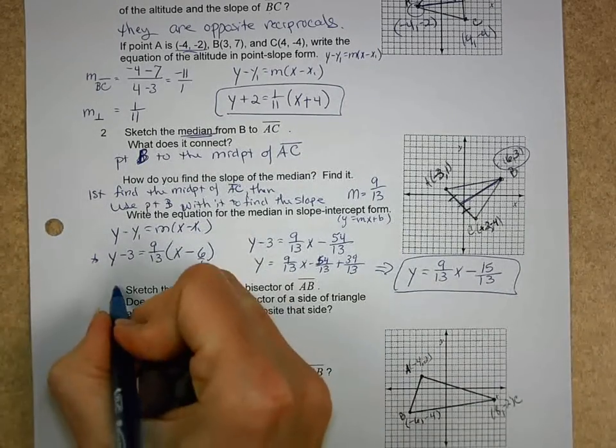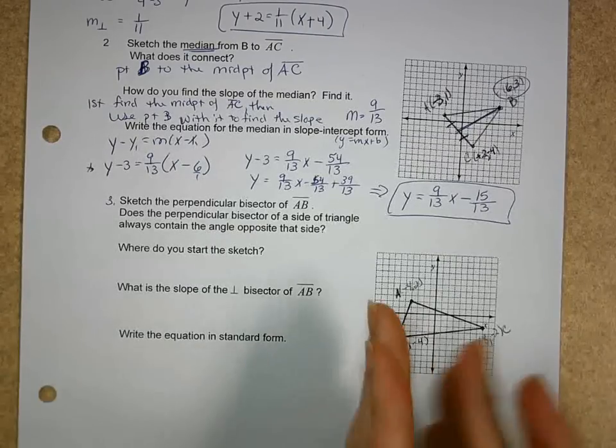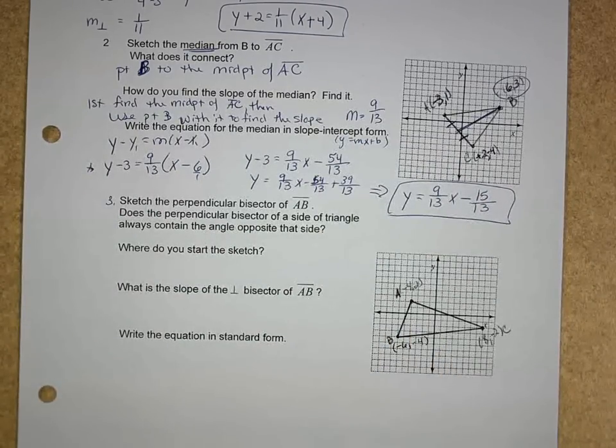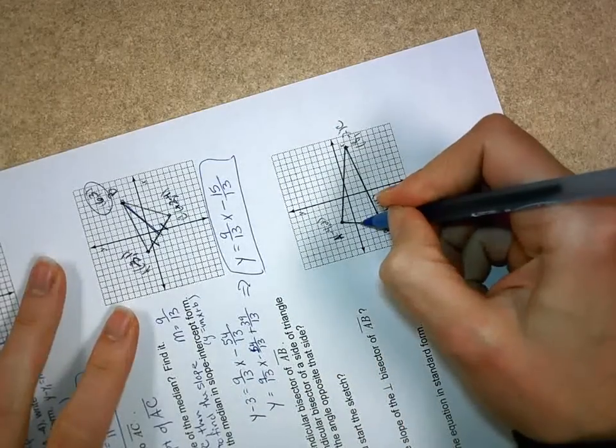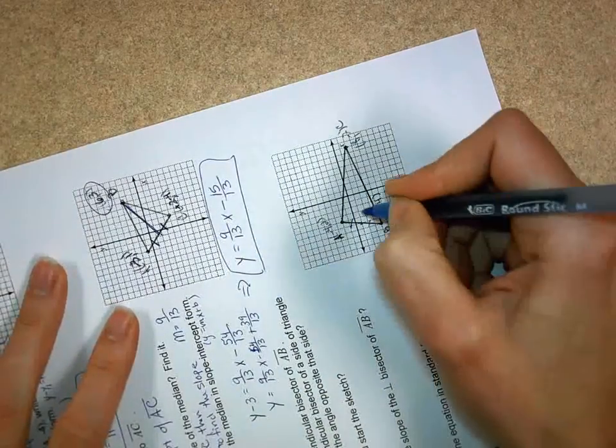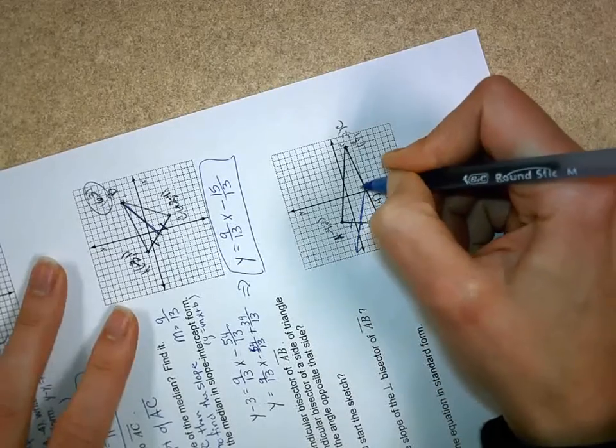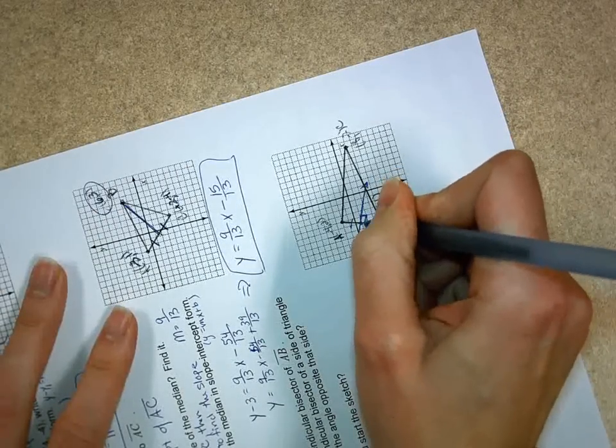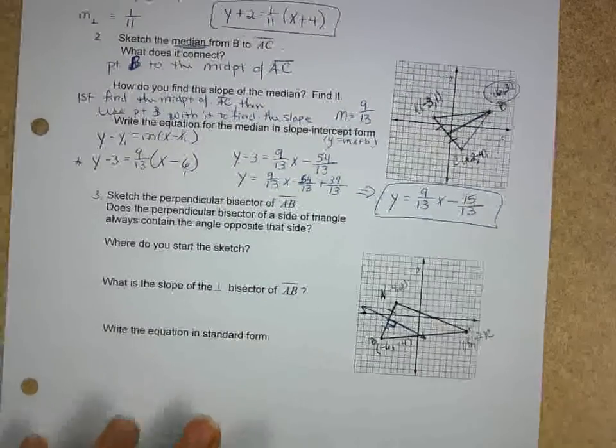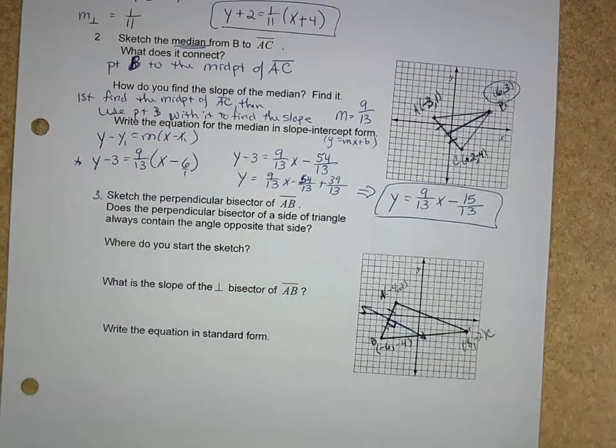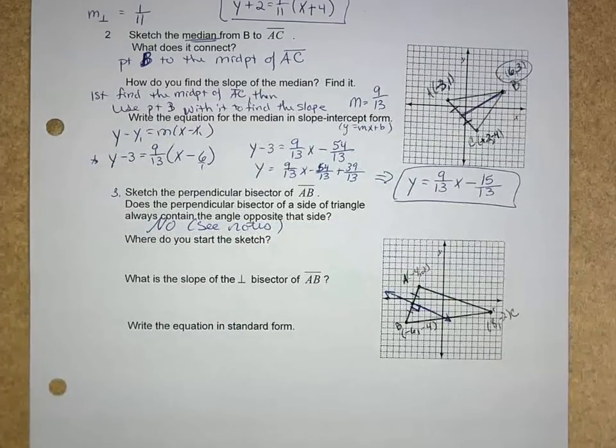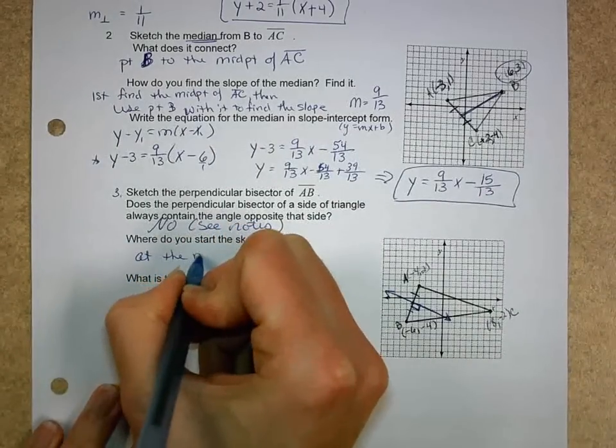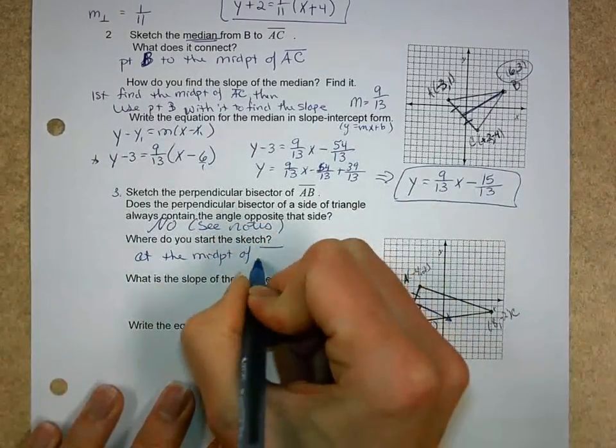Let's do the last one here together. Number 3. It's a perpendicular bisector. If I probably took away the diagram, you all could write the equation of the perpendicular bisector, because didn't we do that for Chapter 3's writing equations of lines? It says sketch the perpendicular bisector of segment AB. So what do I do? I go to segment AB and I find the midpoint, and I'm going to get two congruent segments. Perpendicular means I have to form a right angle. So ignoring the vertice, because that's what the definition says, nothing about going through a vertex, I draw in the perpendicular bisector. So there is the perpendicular bisector of segment AB. Does the perpendicular bisector of the side of the triangle always contain the angle opposite the side? No. See your notes. It will tell you that. Where did you start the sketch? At the midpoint of segment AB.